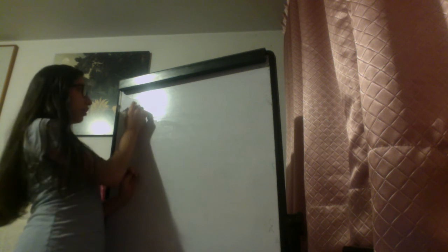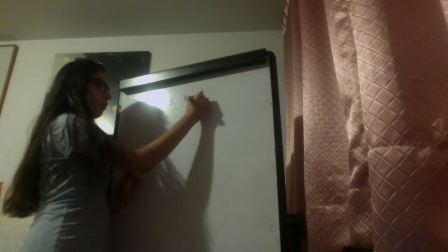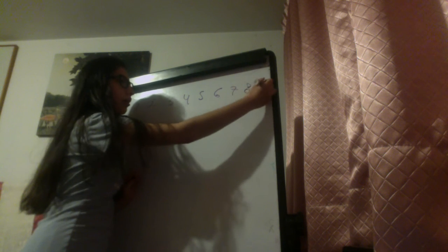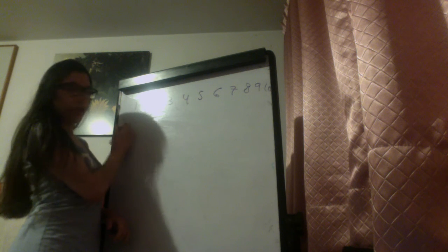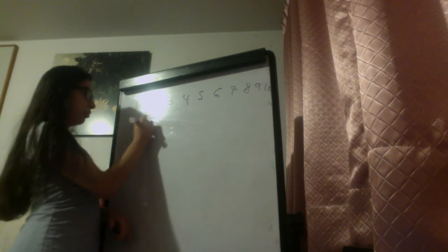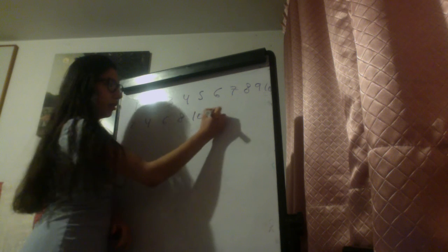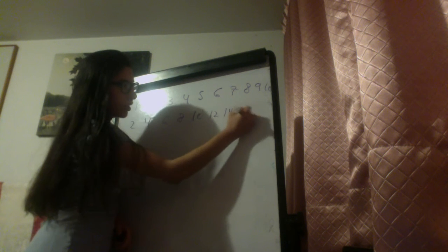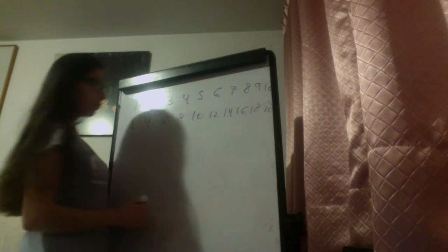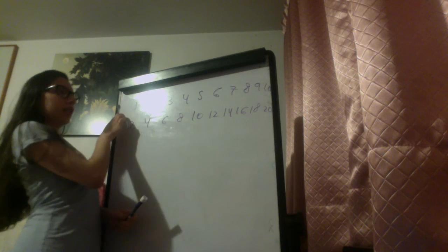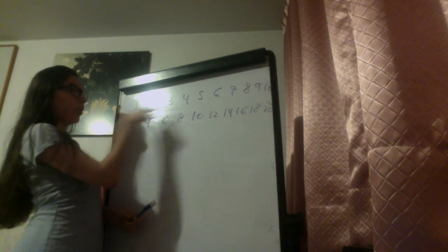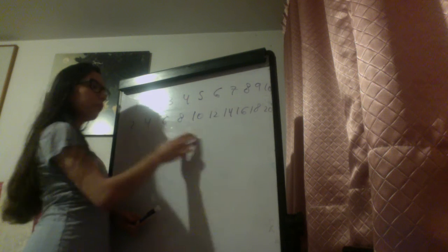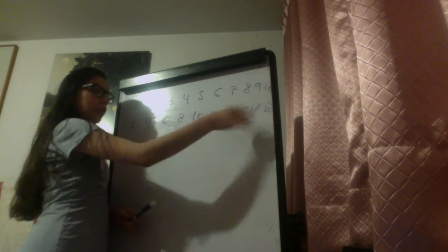Let's put the first 10 natural numbers: 1, 2, 3, 4, 5, 6, 7, 8, 9, and 10. And now let's put the even numbers: 2, 4, 6, 8, 10, 12, 14, 16, 18, 20. One can say that for every natural number we can take the double of that number, and we will have infinity natural numbers and infinity even numbers.